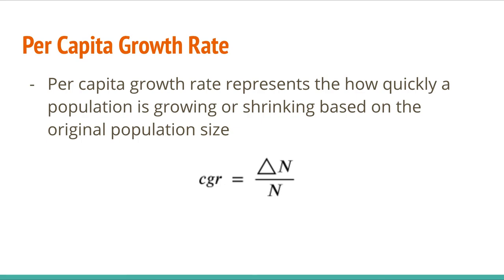So per capita growth rate is CGR, literally capita growth rate, and it is calculated by the change in population over the initial size of the population.